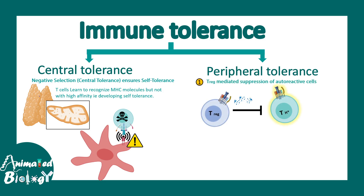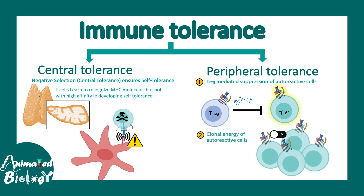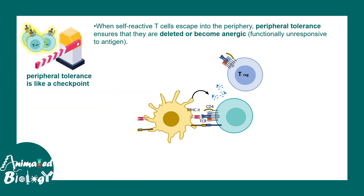In peripheral tolerance, one of the key players is the regulatory T cell, which can suppress auto-reactive T cells. There are also mechanisms known as clonal anergy and peripheral deletion, which help in eliminating these auto-reactive cells and protecting our body from harmful auto-antibodies or auto-reactive cell types. When self-reactive T cells escape to the periphery, peripheral tolerance ensures they are deleted or at least become inert — it's like a checkpoint, similar to a two-factor password system.